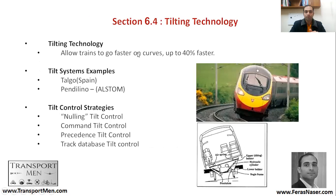Tilting allows trains to go faster on curves by up to 30%. The Pendolino is a famous example, owned by Alstom, and Talgo is a Spanish system — both are tilting systems but use different technology. There are different strategies to control tilting: nulling tilt control, command tilt control, precedence tilt control, and track database tilt control. With track database tilt control, the system acts based on the known track database and reacts accordingly.